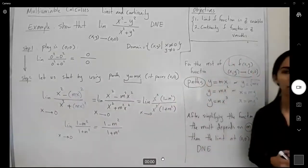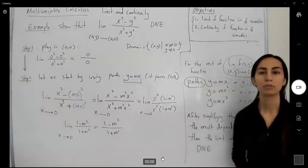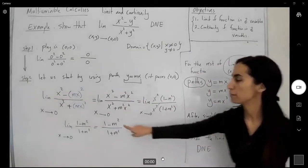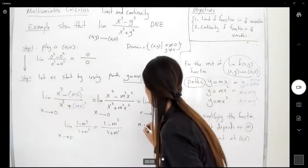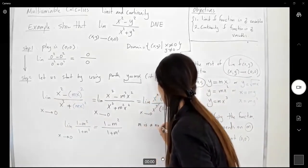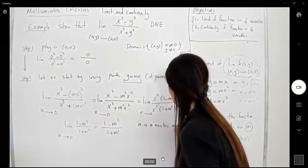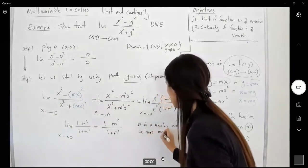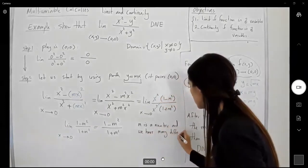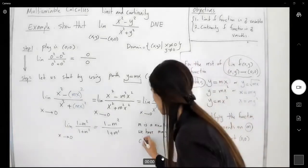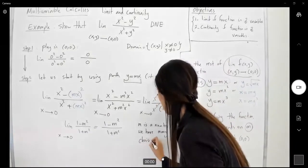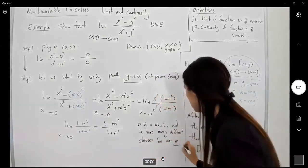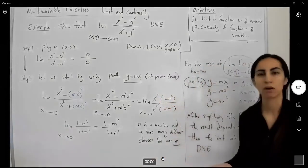I can select m to be 1. You can select m to be 2. It can be a half. It can be negative 2. m is a constant. m is a number, and we have many different choices for m. So what's the meaning of that?